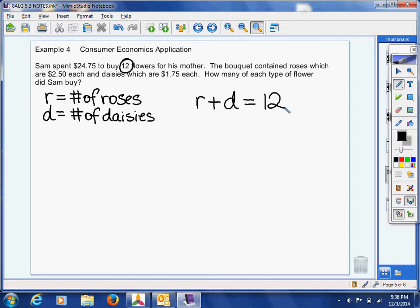Now, the second equation has to do with the money. We know how much he spent in all, so we know the total. We know he spent $24.75. And the only other thing we know is how much each flower cost. So we know the roses were $2.50 each, and we know the daisies were $1.75 each. So believe it or not, there are your two equations right there.